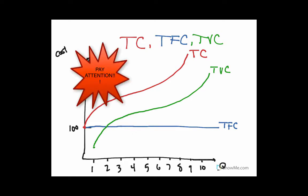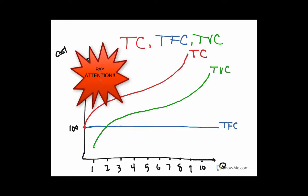We don't really use these quite as much as the average and marginal curves in economics, because you can tell more from the average and marginal curves. But if you see a graph like this and they're not labeled, one way to know that these are total curves is that they're always increasing, or constant in the case of total fixed cost. When you add output, you add cost. Average curves and marginal curves go down and up and are a little bit more variable.